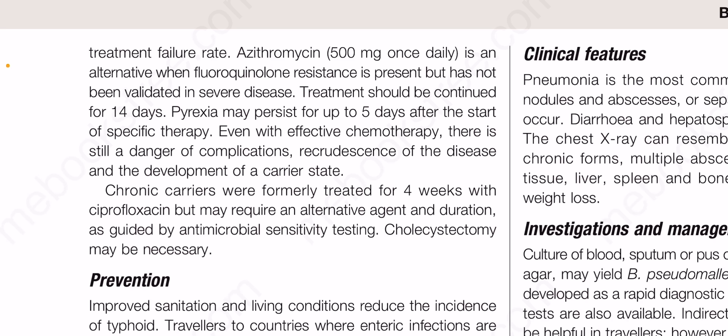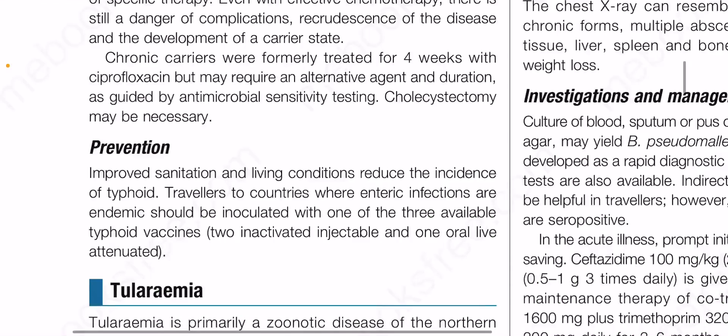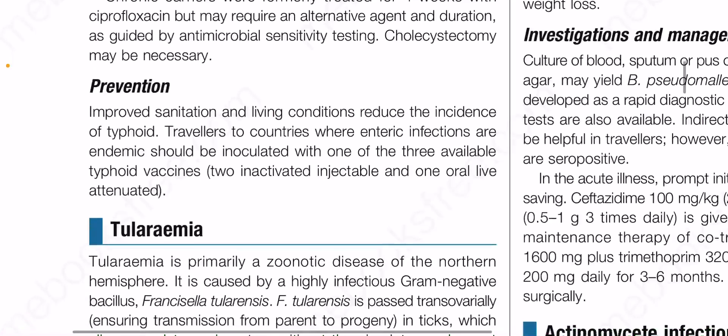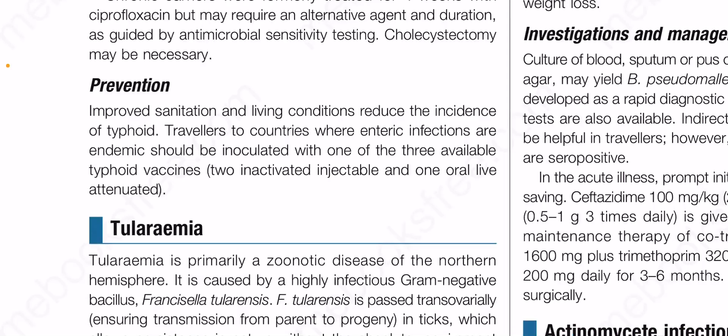Cholecystectomy may be necessary for chronic carriers. Prevention is aided by improved sanitation and living conditions. Travelers to countries where enteric infections are endemic should be inoculated with one of the three available typhoid vaccines — two inactivated injectable and one oral live attenuated.